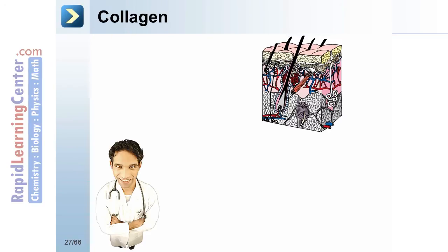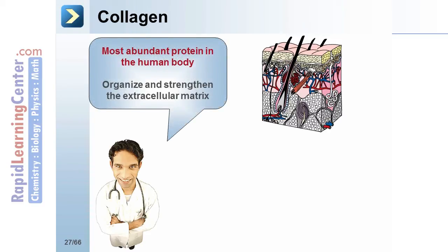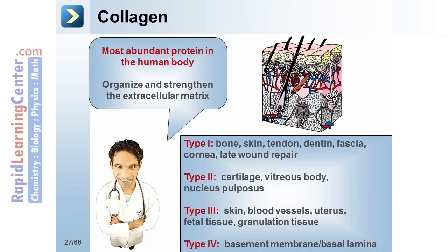In the human body, collagen is the most abundant protein. It is extensively modified and acts to organize and strengthen the extracellular matrix. Type 1 collagen, which comprises 90% of the total collagen, is found in bone, skin, tendon, dentin, fascia, cornea, and in late wound repair. Type 2 is found in cartilage, vitreous body, and nucleus pulposus. Type 3 is found in skin, blood vessels, uterus, fetal tissue, and granulation tissue. Type 4 collagen is found in the basement membrane, or basal lamina.